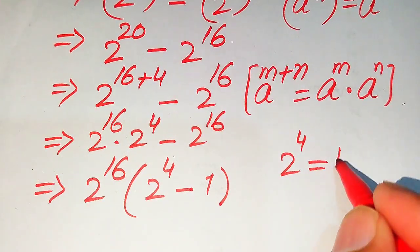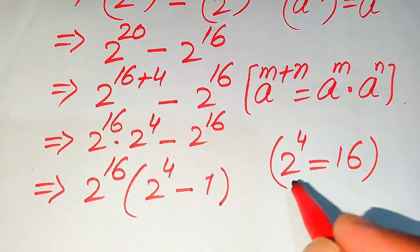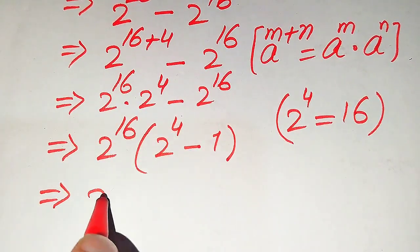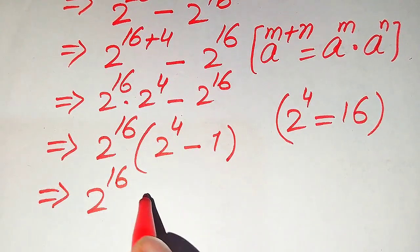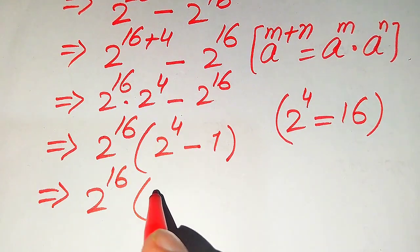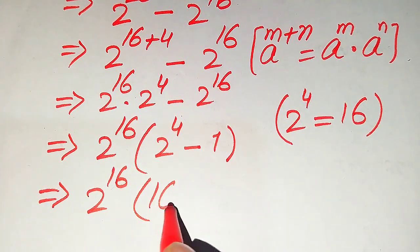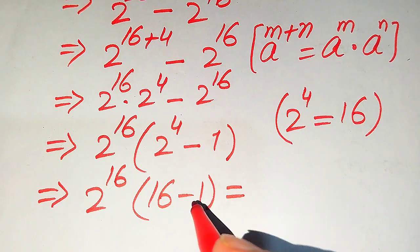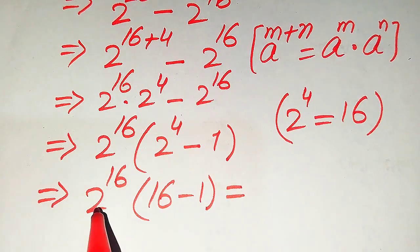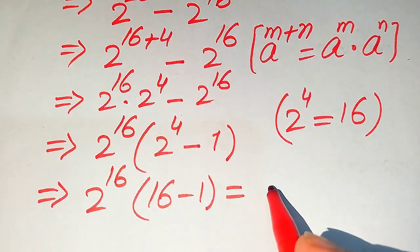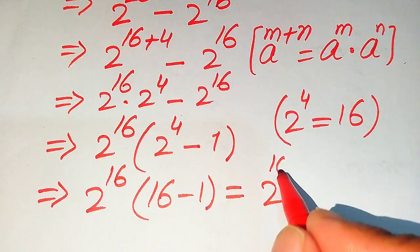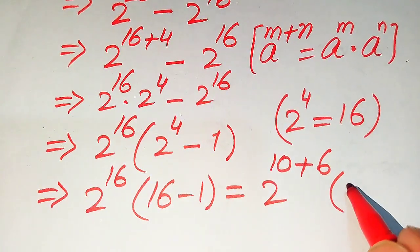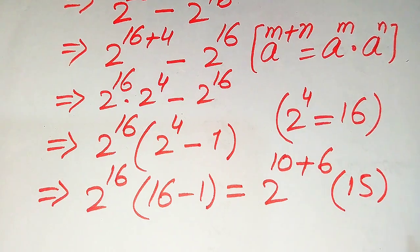We know that 2 to the power of 4 equals 16, so we replace 2^4 with 16. The expression becomes 2^16 multiplied by (16 minus 1), and 16 minus 1 equals 15. So we have 2^16 multiplied by 15.